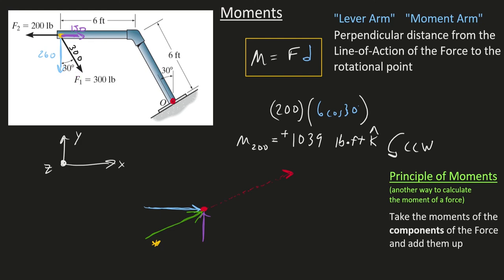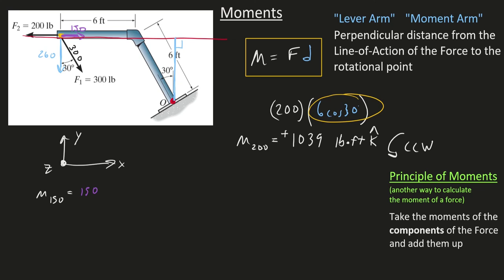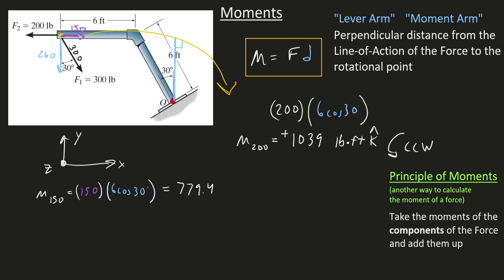Now I calculate the moment of each component. The moment of the 150-pound component equals 150 times its lever arm. Drawing the line of action and the perpendicular distance, it's the same lever arm we calculated before for the 200: 6 cosine of 30. That gives 779.4. For direction, the 150 wants to rotate the rod clockwise, so by the right-hand rule my thumb points into the screen — that's a negative Z moment.